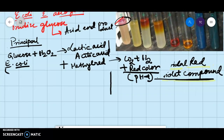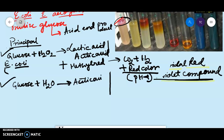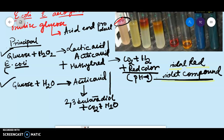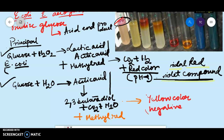For the control bacterium Enterobacter aerogenes: glucose plus water produces acetic acid, which is then converted to 2,3-butanediol plus carbon dioxide plus water. When you add methyl red to this, you get a yellow color — that is your negative test at pH 6. So that is about your Methyl Red principle for Enterobacter aerogenes.